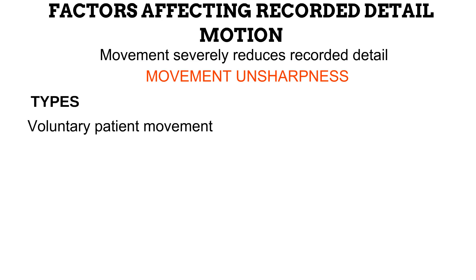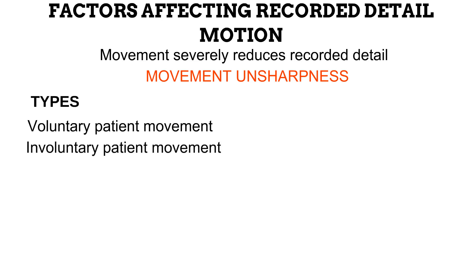The second is unsharpness due to involuntary patient movement. There are parts of the body which move without our control — heartbeat and bowel movements are examples. Unsharpness due to these movements can be prevented by taking advantage of the reciprocity law: the exposure time is reduced and the mA increased to arrive at the same density. With a shorter exposure time, the image can be acquired before movement disrupts the detail.